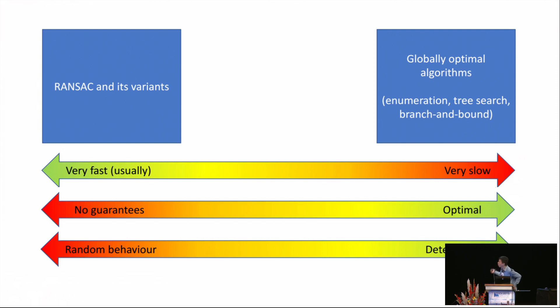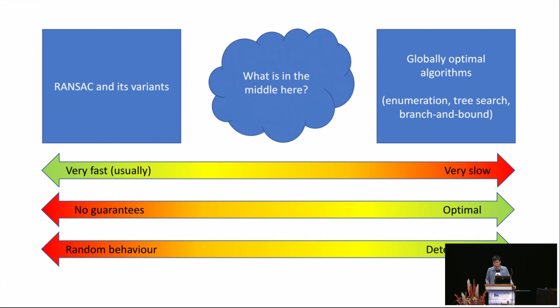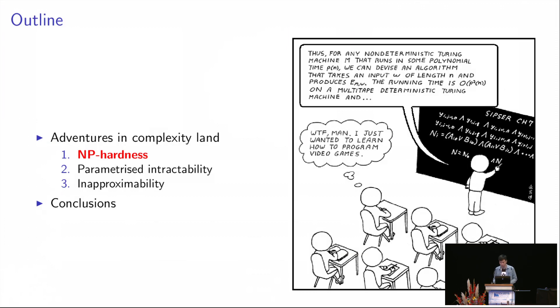And the global optimal algorithms are deterministic. So the question we really want to ask is, what can we achieve in the middle here? How many of these strengths we have listed can we achieve simultaneously? So to answer this question, let's start our adventure in the complexity land. Our land contains three parts.